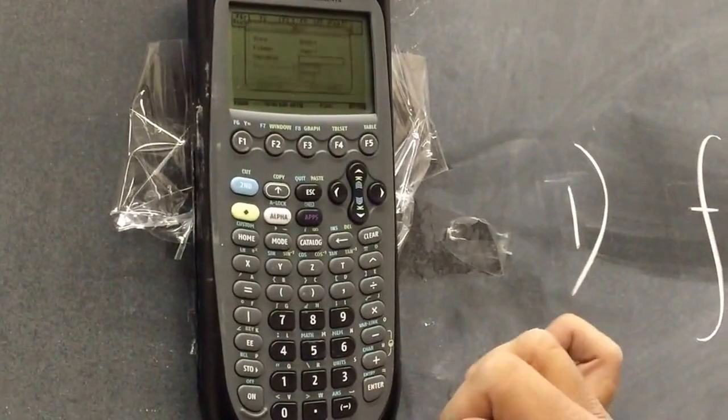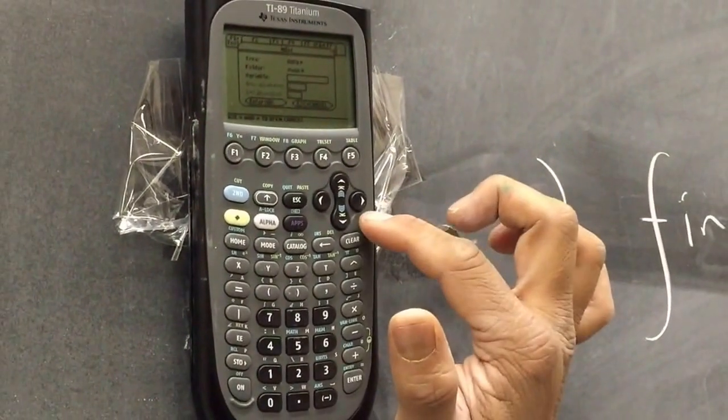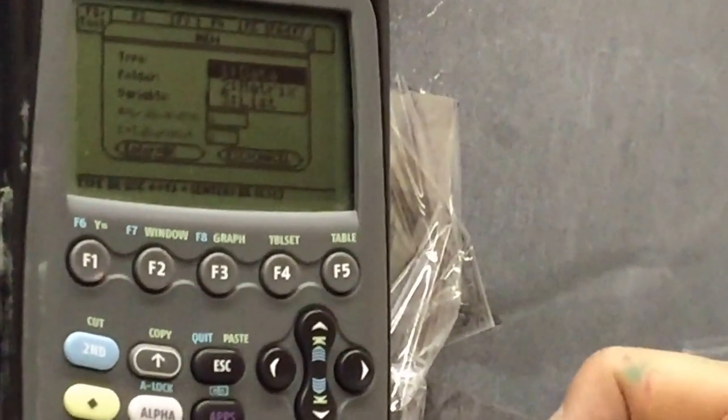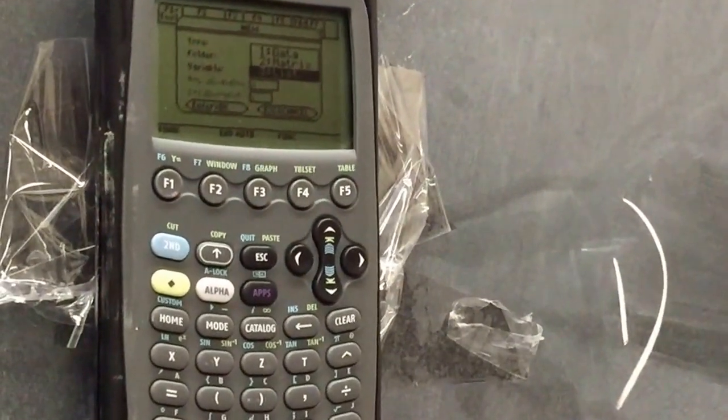I'm going to choose new. Once I'm at new, then I'm going to press the right button right here. This is data. So I'm going to press right button right here and then it gives me an option of list. So I'm going to go all the way down to the list and I'm going to press enter.